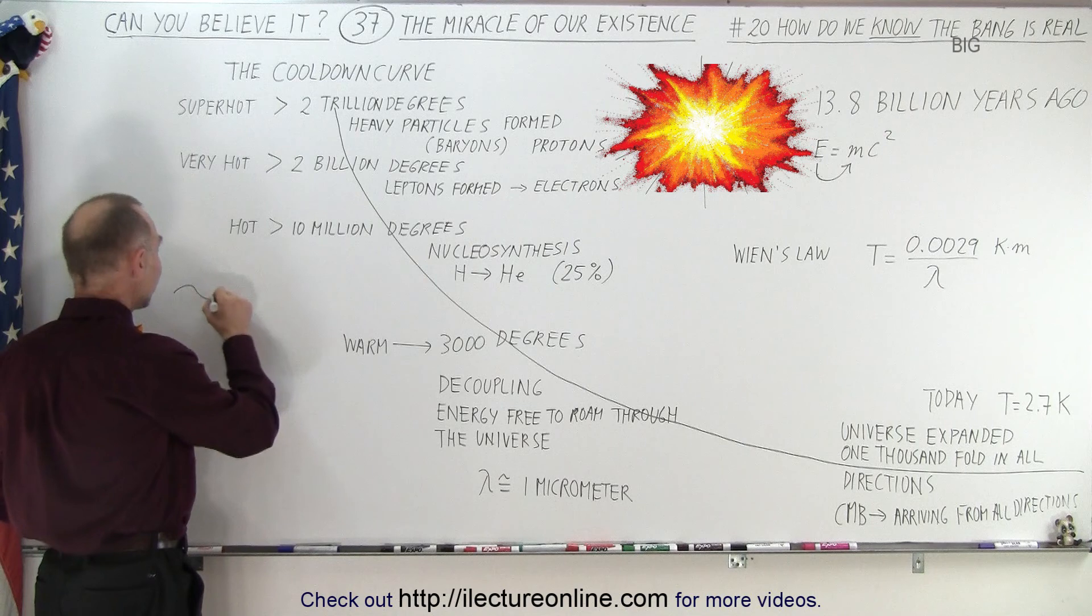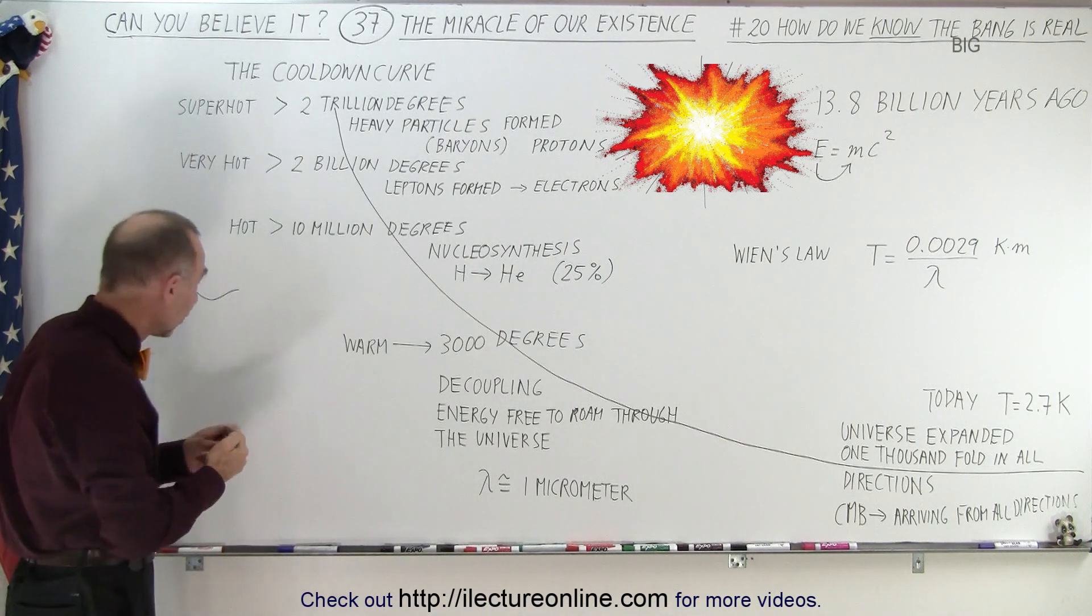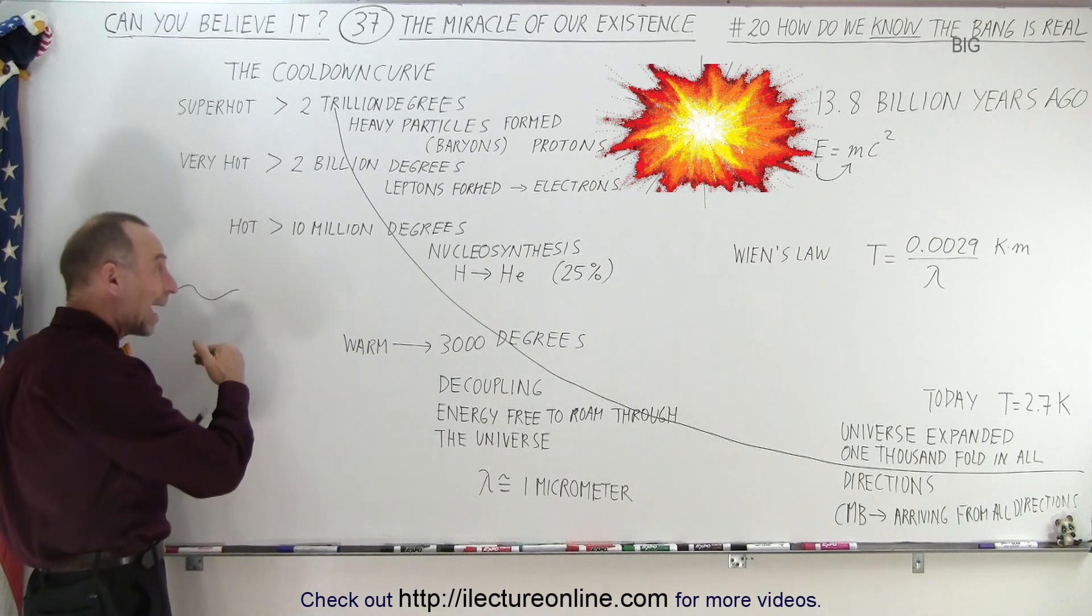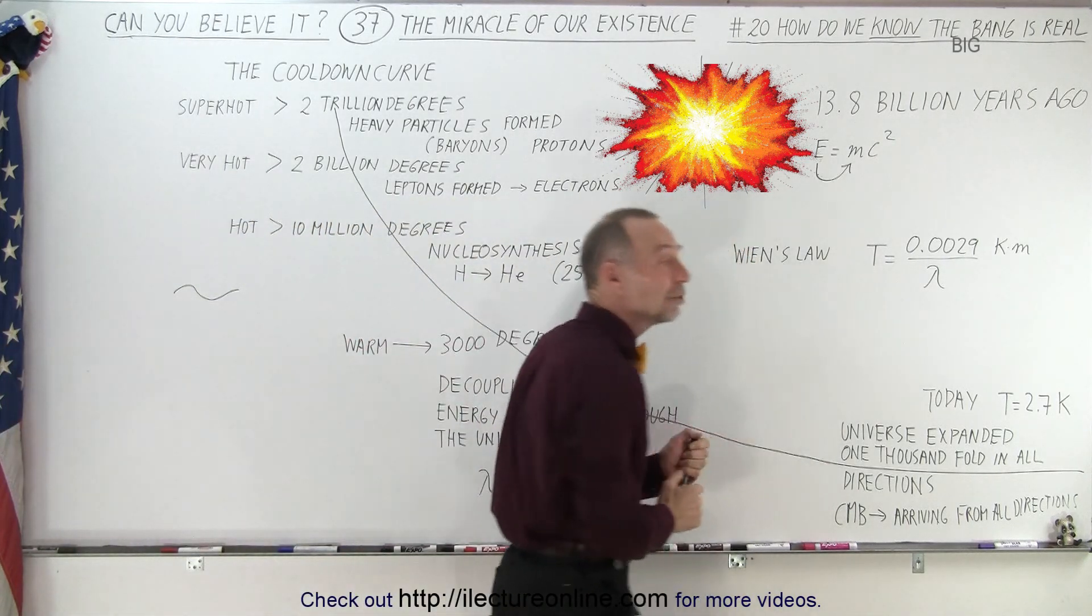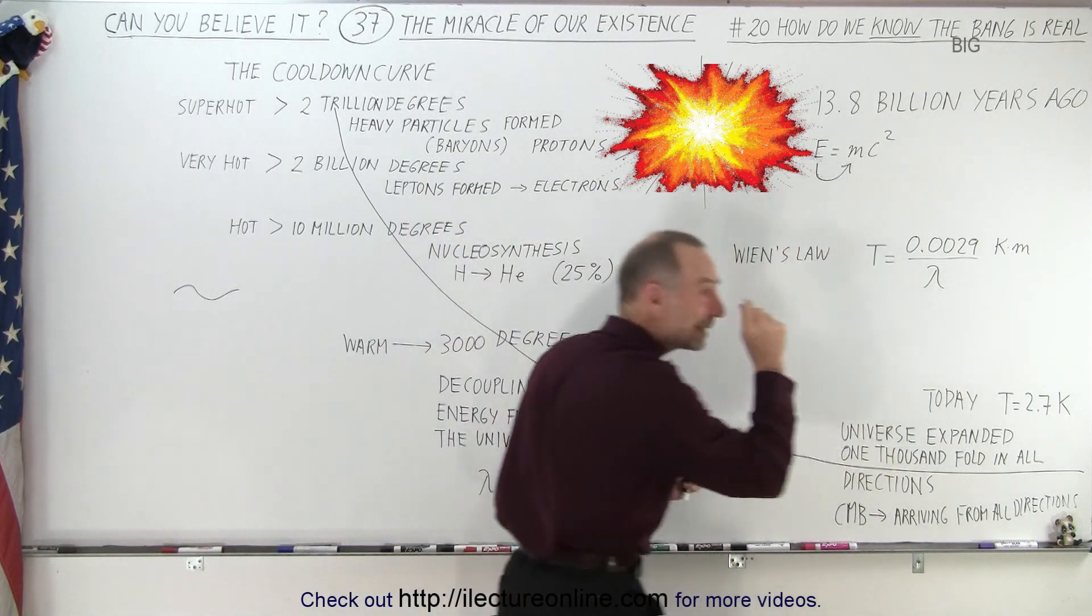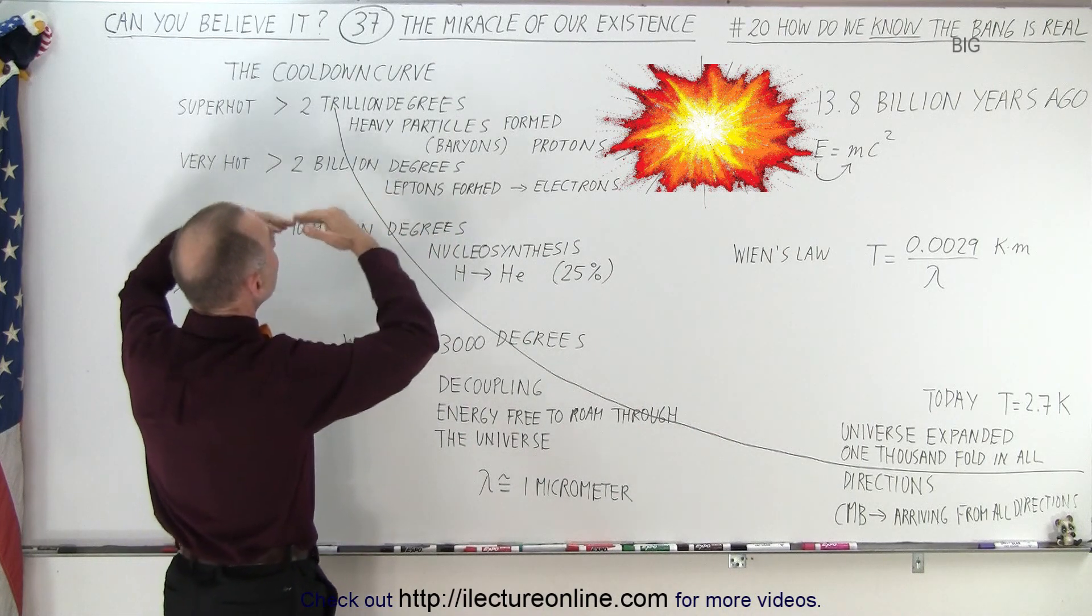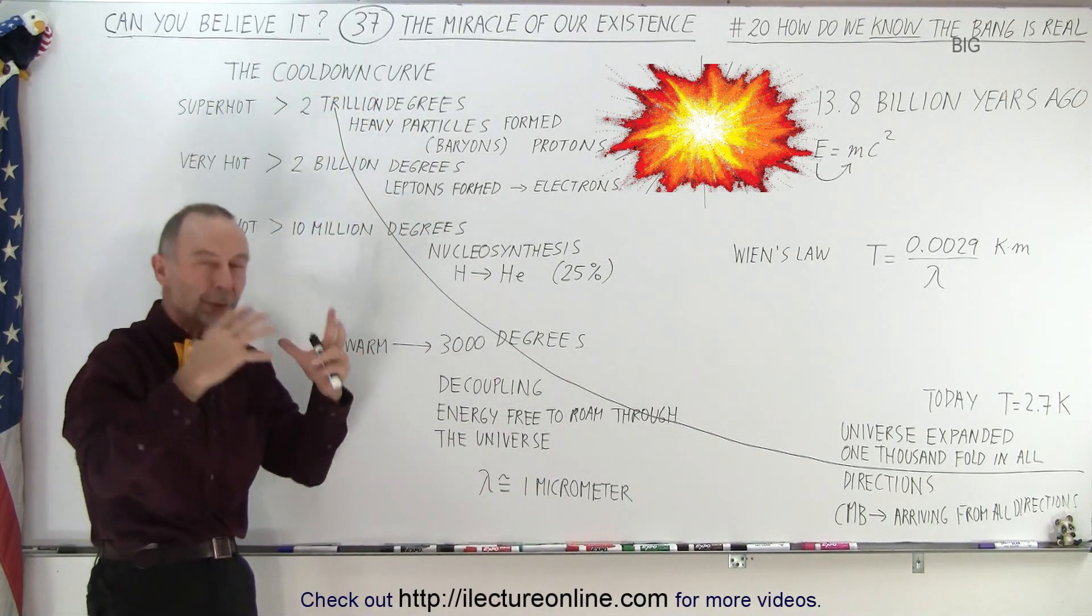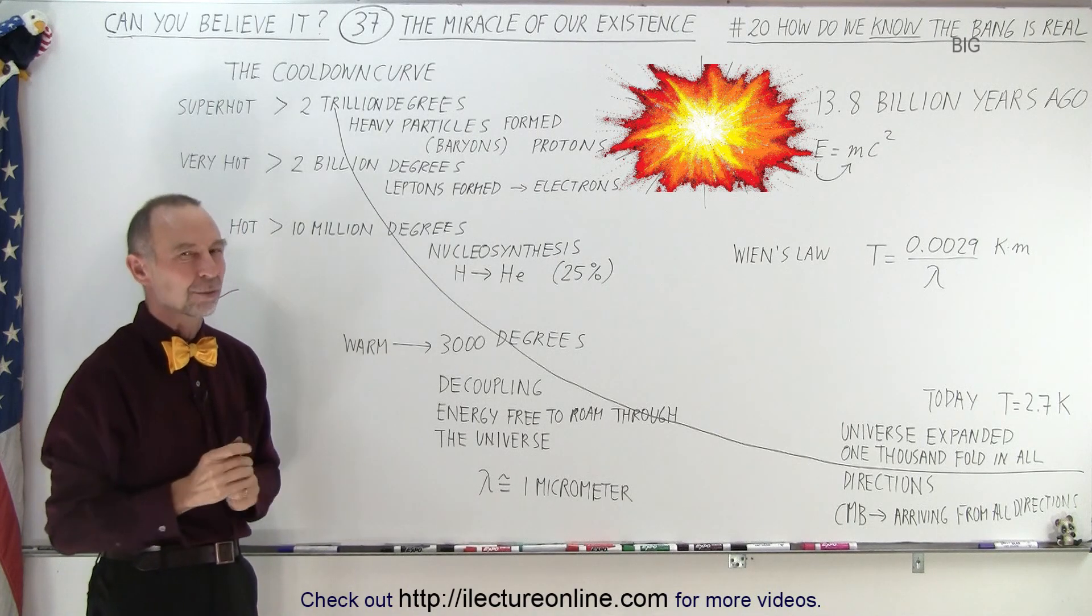So when we have a wave of some sort of electromagnetic radiation, that's what energy is, the shorter the wavelengths, the higher the temperature, and we can see that from this equation called Wien's law. And the wavelengths were so incredibly tiny at the very beginning that the temperature of the universe was absolutely phenomenal at the very beginning. We had this super, super hot universe filled with energy. That's a fairly good assumption.